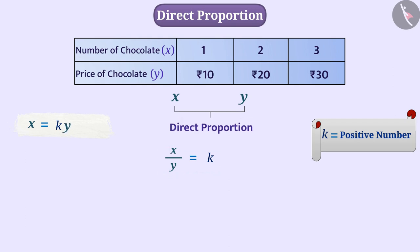In case of direct proportion, if value of x is x1, x2, x3 and so on and corresponding values of y is y1, y2, y3 and so on,